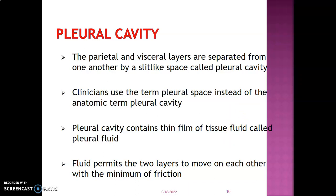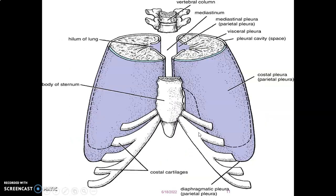The pleural cavity is a cavity between the parietal and visceral layers of the pleura; it is also called the pleural space. This cavity contains pleural fluid — a tissue fluid — which, just like pericardial fluid of the heart, permits the two layers to move with minimum friction. You can see the pleural cavity or pleural space, which usually contains this fluid.